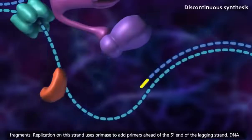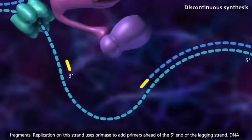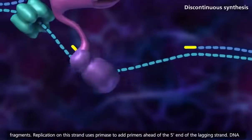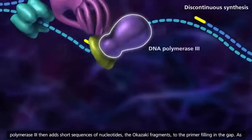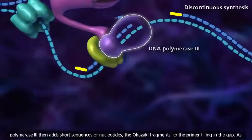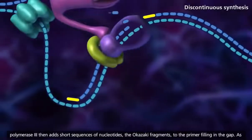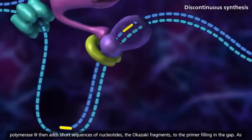Replication on this strand uses primase to add primers ahead of the 5' end of the lagging strand. DNA polymerase 3 then adds short sequences of nucleotides, the Okazaki fragments, to the primer filling in the gap.